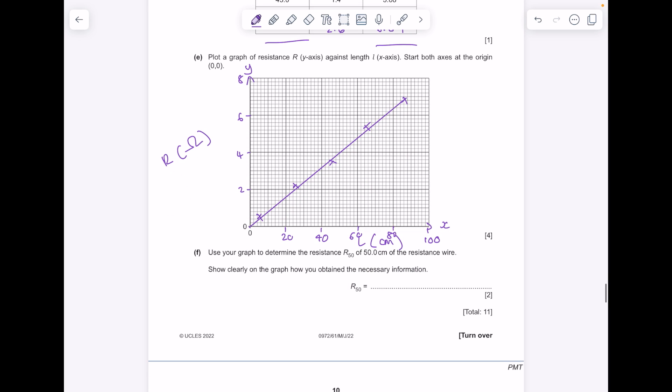Use your graph to determine the resistance R50 of 50 centimeters of the resistance wire. Show clearly on the graph how you obtained your answer. So we need to read up at 50 centimeters length of wire, read across and we can see that the resistance here is 4 ohms.